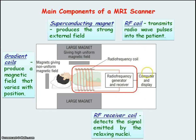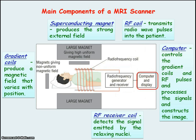These signals are sent to a computer which processes them and constructs the image. The computer is also needed to control the gradient coils and the radio frequency pulses transmitted into the patient.